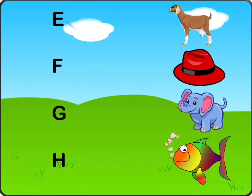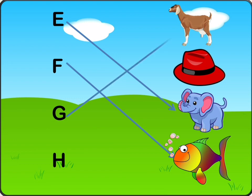E is for Elephant. F is for Fish. G is for Goat. H is for Hat.